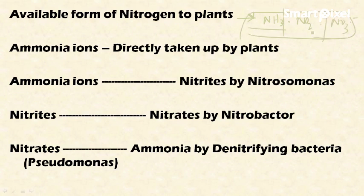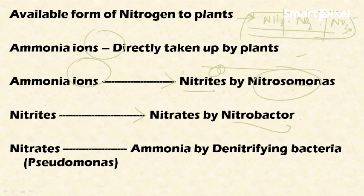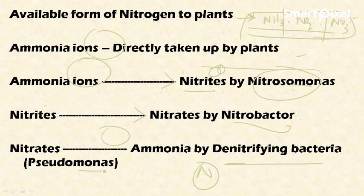Plants take up nitrogen in the forms of ammonia, nitrites, and nitrates for growth and development. Ammonia is directly taken up by plants via symbiosis. Ammonium ions are converted into nitrites by a class of bacteria called Nitrosomonas. These nitrites are then converted into nitrates by Nitrobacter bacteria. These two bacteria are important because they convert ammonia through successive forms.